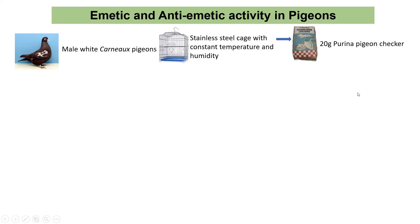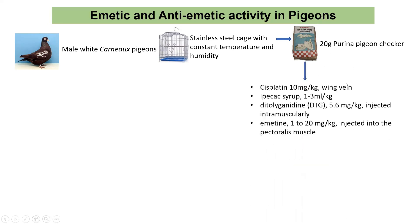Emesis is produced by administration of any one of the following compounds: cisplatin at 10 mg per kg into the wing vein, ipecac syrup 1 to 3 ml per kg, dioptioganidine 5.6 mg per kg injected intramuscularly, or emetine 1 to 20 mg per kg injected into the pectoralis muscle. These are the compounds which produce emesis.